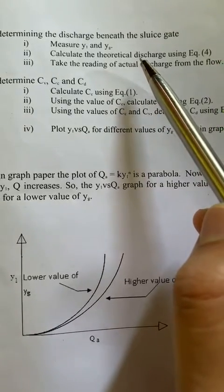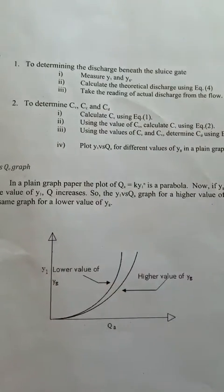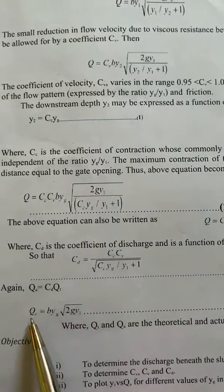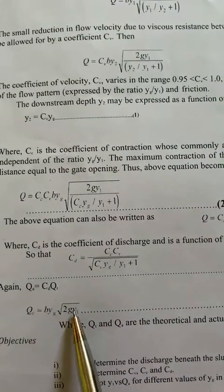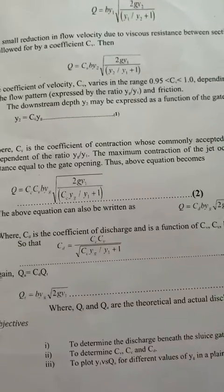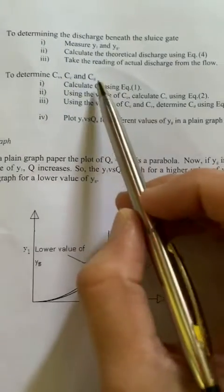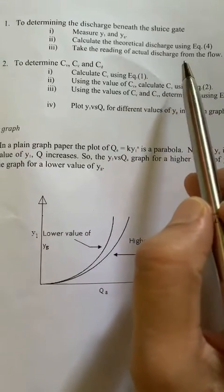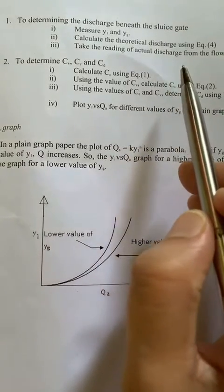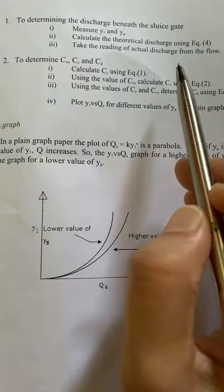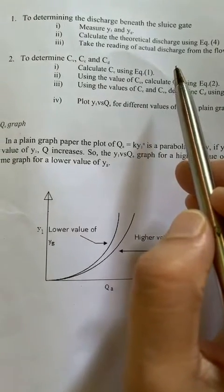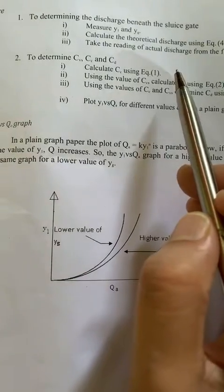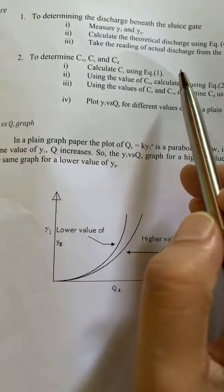we have to find out the theoretical discharge using the equation qt equal to b·y2·√(2g·y1). After that, taking the readings of actual discharge, we have to find out the actual discharge from the flow using the formula q equal to a·v, where v is the velocity and a is the area.